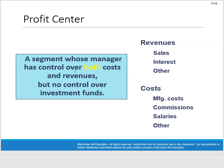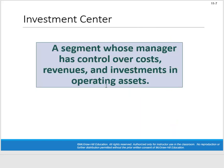A profit center is a segment whose manager has control over both costs and revenues, but no control over investment funds — like a sales department that brings in revenue and has costs, but doesn't make high-level decisions about investing in new buildings or equipment. An investment center is a segment whose manager has control over costs, revenues, and investments in operating assets — making big decisions about spending funds on buildings, equipment, trucks, and warehouses. These are high-level decision makers.